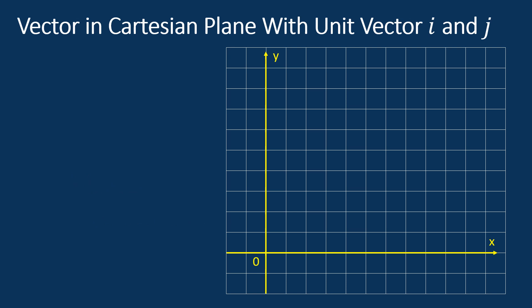In a Cartesian plane, a vector can be represented in terms of its components along the x-axis and y-axis. The i and j notations are used to represent the x component and y component of the vector respectively. For example, consider the vector v with its tail at the origin and its head at the point (4, 6) in the Cartesian plane. The x component is the horizontal distance from the origin to the point (4, 0), which is 4. The y component is the vertical distance from the origin to the point (0, 6), which is 6.